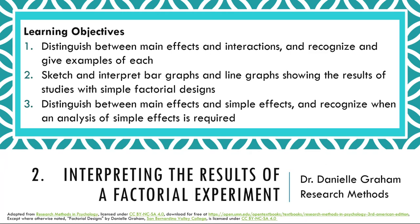Section 2: Interpreting the results of a factorial experiment. The learning objectives for this section are: 1. Distinguish between main effects and interactions, and recognize and give examples of each.